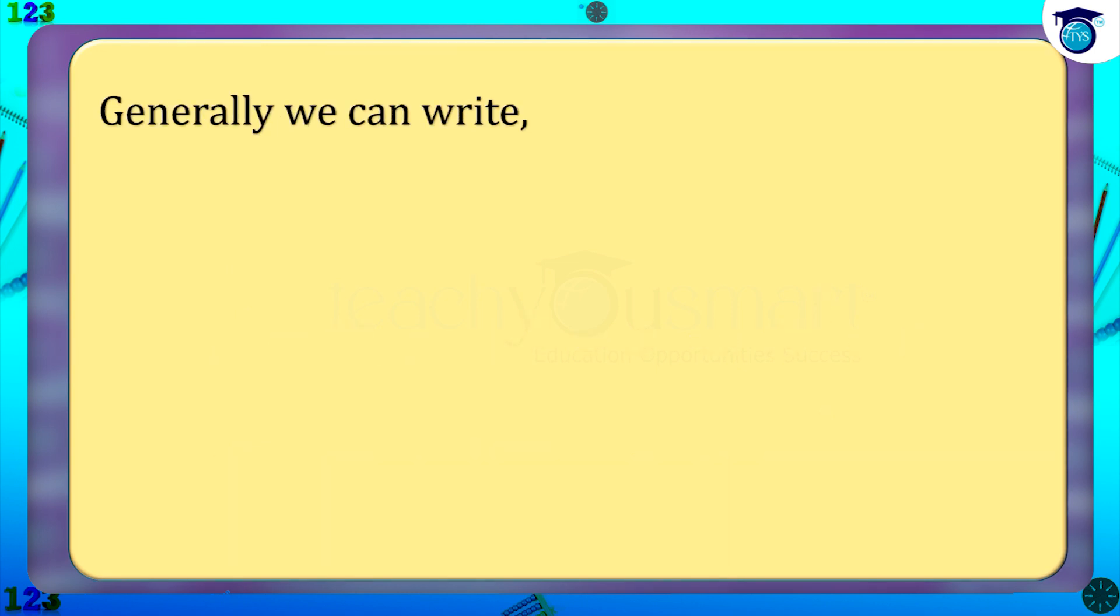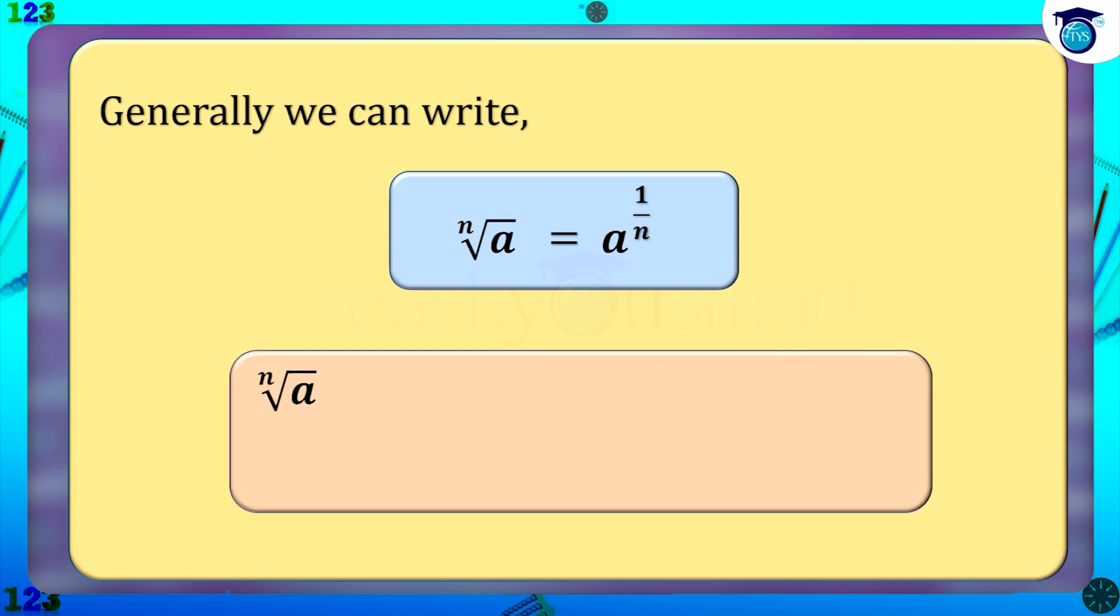Generally, we can write nth root of a equals a raised to one by n. Also, nth root of a for any real number is defined as: nth root of a equals b, if b raised to n equals a, where a is greater than zero.